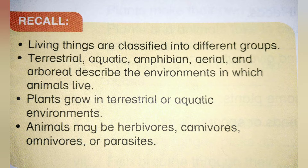Plants grow in both terrestrial and aquatic environments. Animals may be herbivores — meaning plant eaters; carnivores — meaning meat eaters; omnivores — those that eat both plants and animals; or parasites — animals that live inside their host.